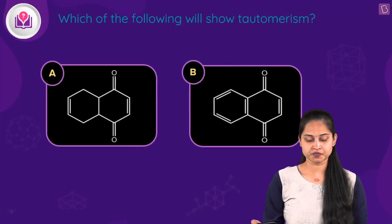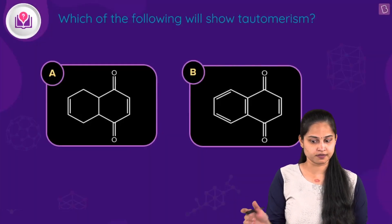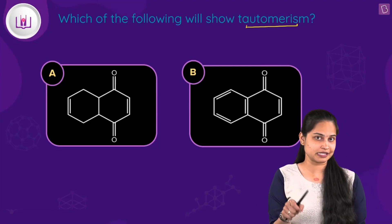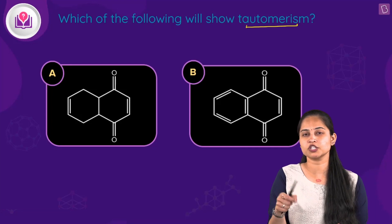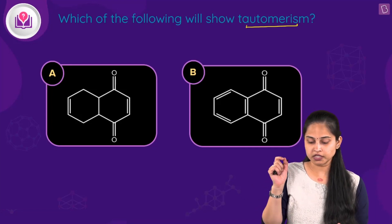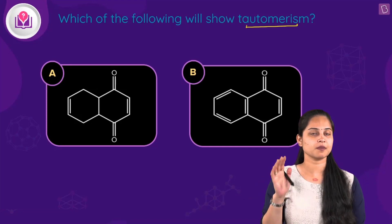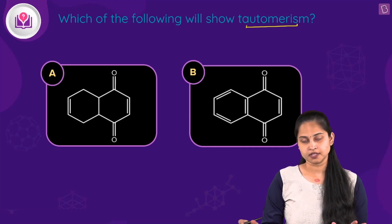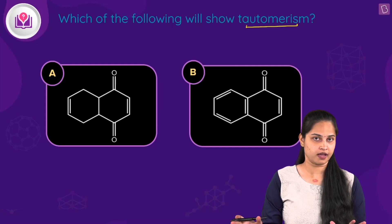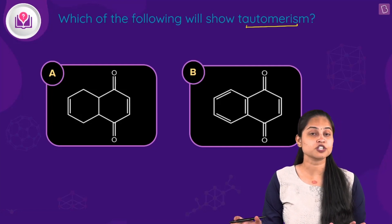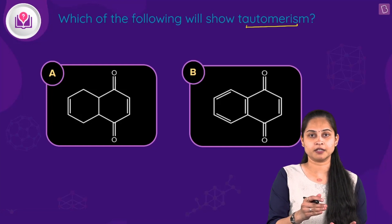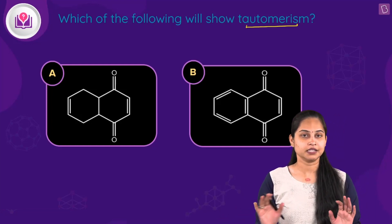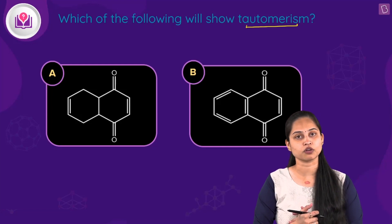The next question asks which compound shows tautomerism. We are discussing keto-enol tautomerism. The basic condition is that the carbonyl group must have an alpha-hydrogen atom attached to an sp3 hybridized alpha-carbon atom for the compound to show tautomerism.